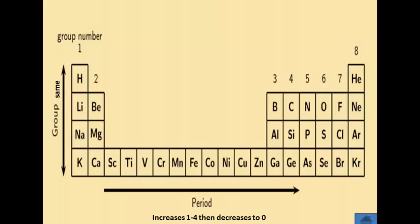Group 4 elements like carbon, with a valency of 4, are relatively stable. Group 16 elements like oxygen are also reactive, as they seek an electron pair to complete their outermost shell and form an octet.